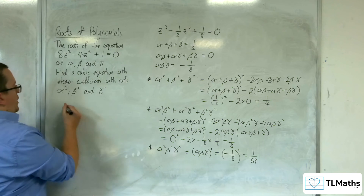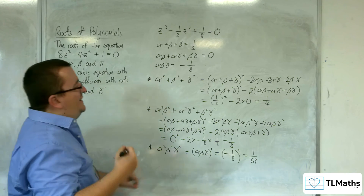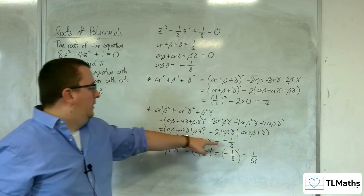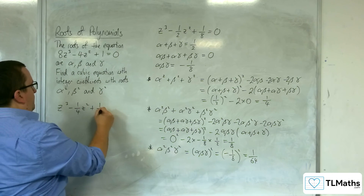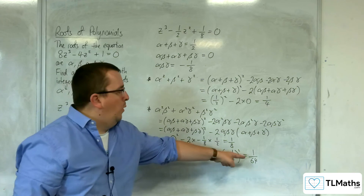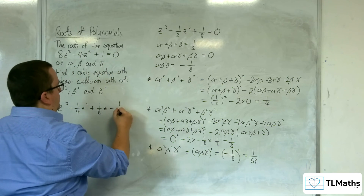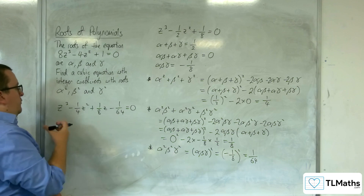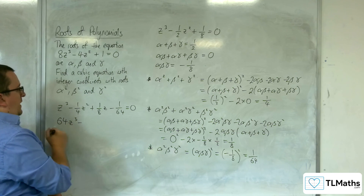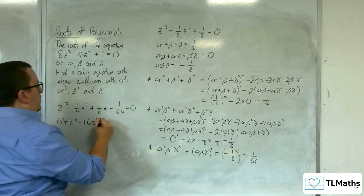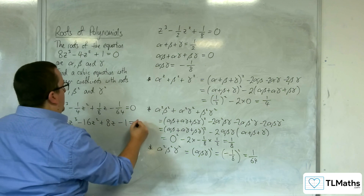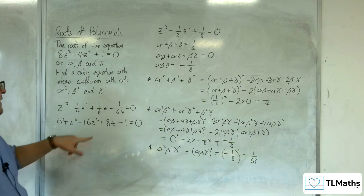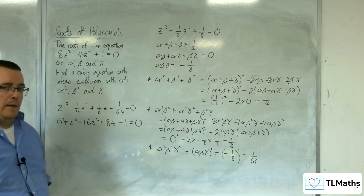So my cubic equation is z cubed minus one-quarter z squared plus one-eighth z minus one over 64 equals zero. Multiplying through by 64 gives 64z cubed minus 16z squared plus 8z minus 1 equals zero. This is the cubic equation with integer coefficients that has roots alpha squared, beta squared, and gamma squared.